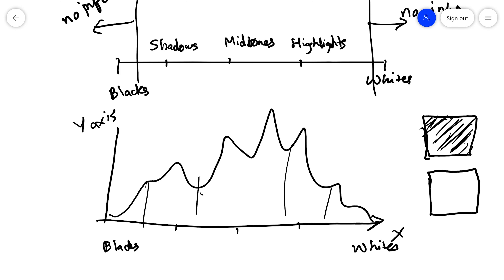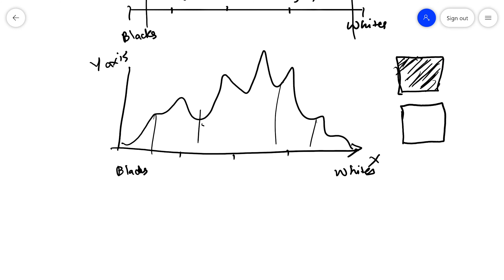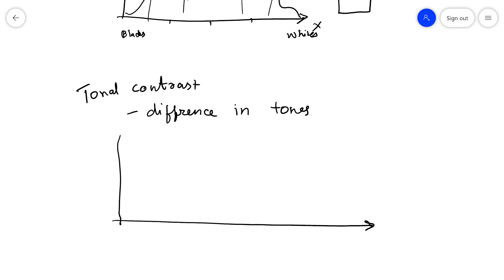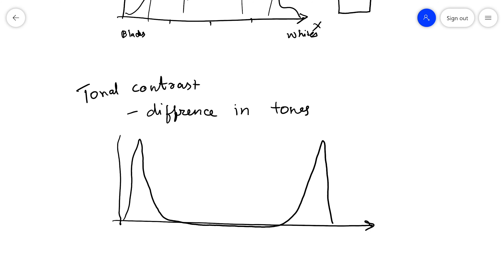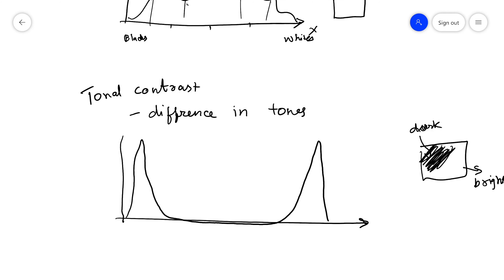Now let's look at how tonal contrast affects the histogram. Tonal contrast is basically the difference in tones in your image. If you have maximum tonal contrast, that means you have a lot of blacks as well as a lot of whites, so a high contrast image's histogram would show peaks on both the dark and bright ends.